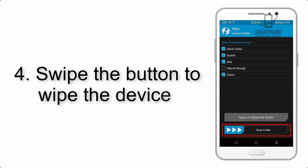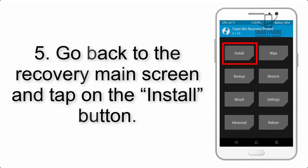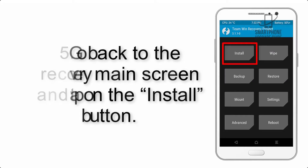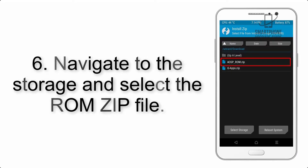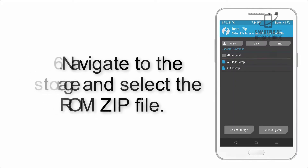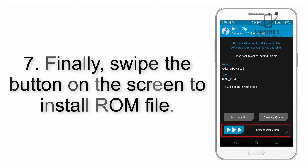Step 4: Swipe the button to wipe the device. Step 5: Go back to the recovery main screen and tap on the Install button. Step 6: Navigate to the storage and select the ROM zip file.